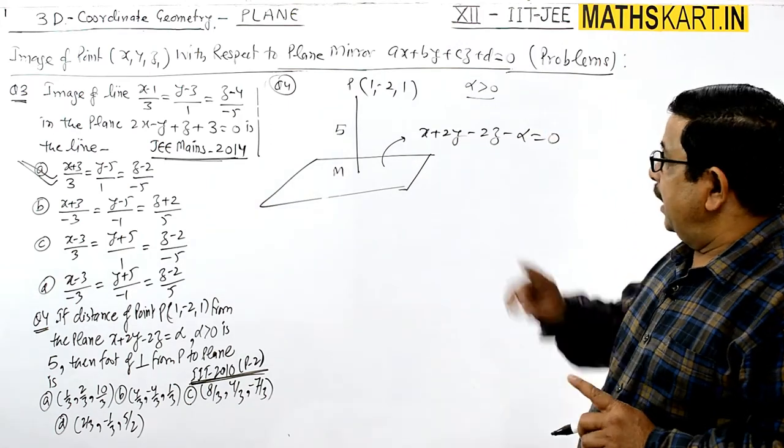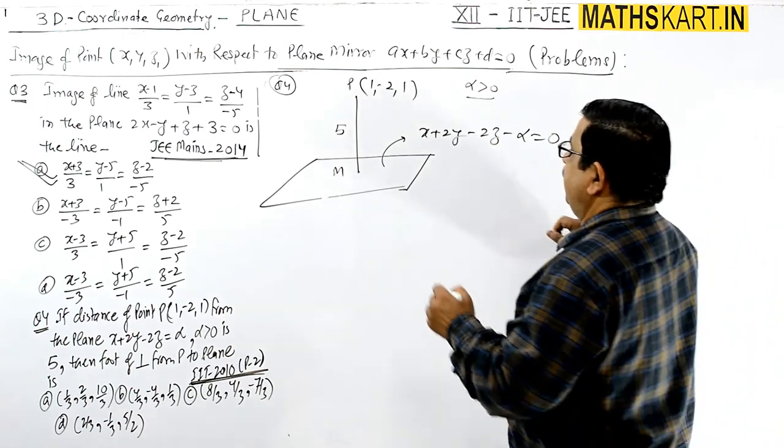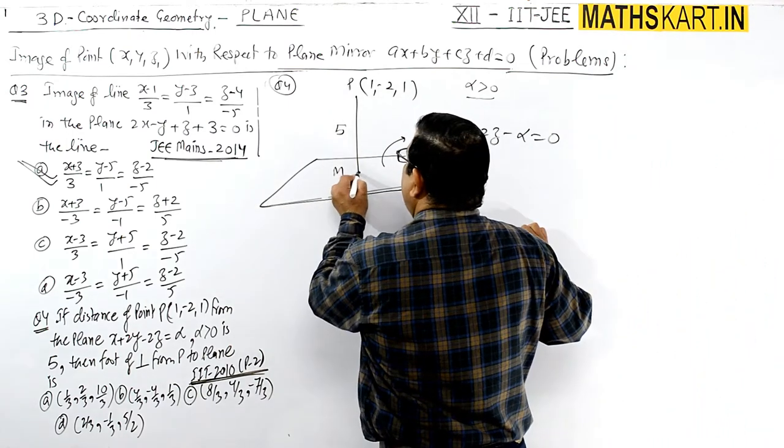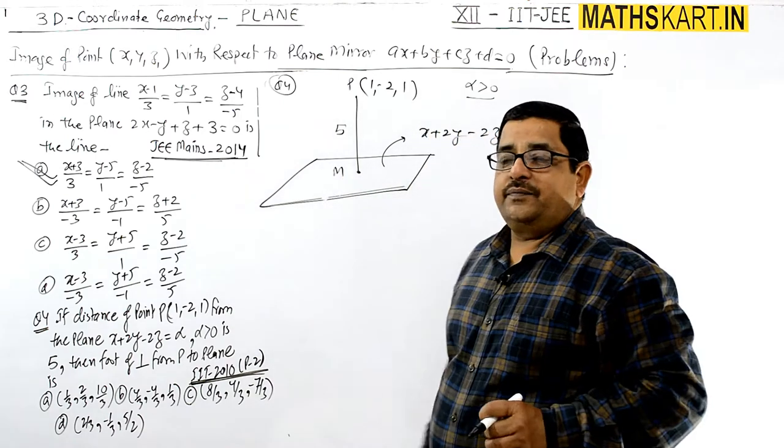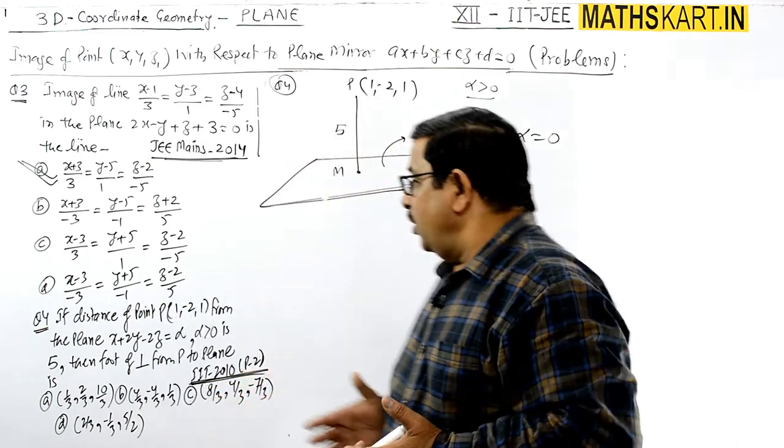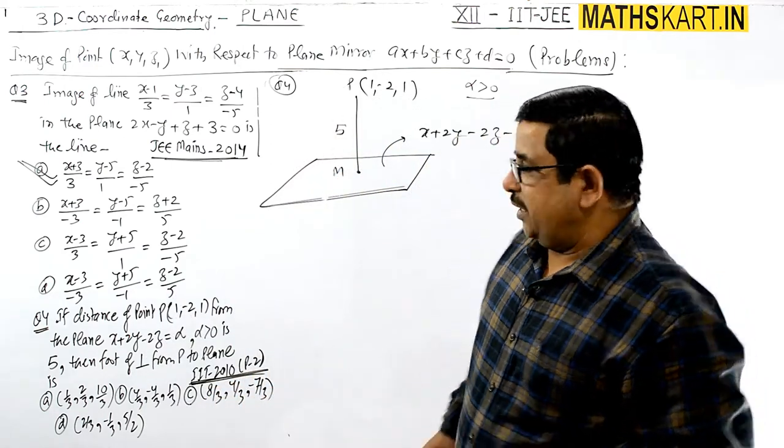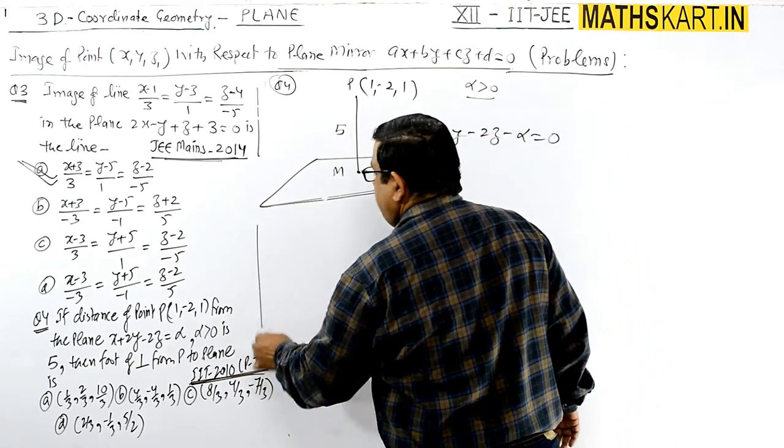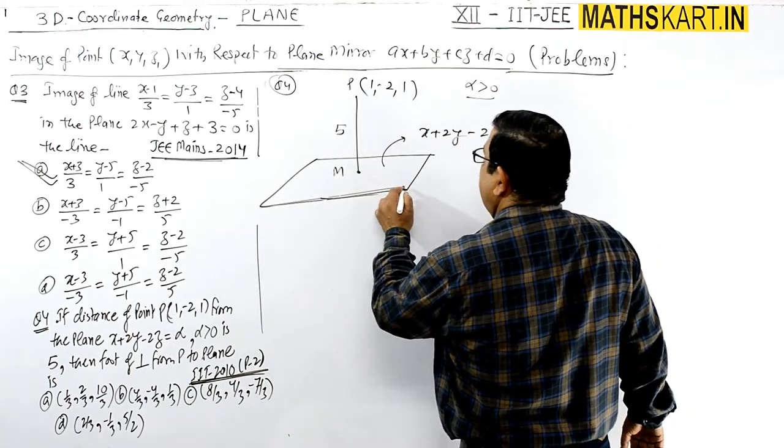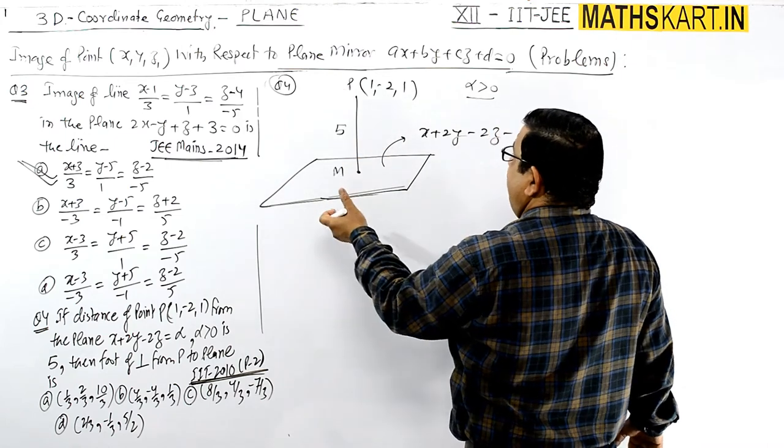At that time, this distance PM is given as 5, then foot of the perpendicular. We have to find the coordinates of M. M's coordinates have to be found. Distance is given. This is IIT 2010 paper second question. So now, one thing we'll do in this - if distance 5 is given against the plane, then we'll write that first. The point is also given.